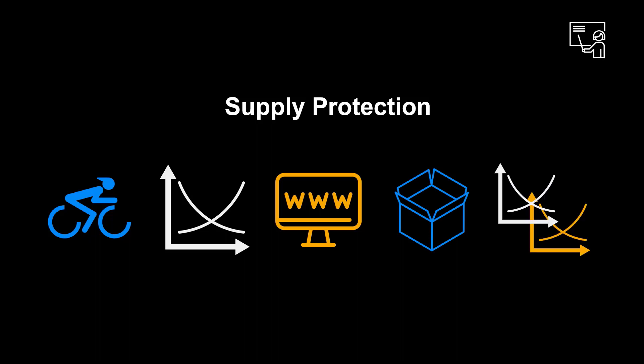Within a supply protection object, there can be protection groups of different prioritization, where a group with high priority takes priority over a lower prioritized protection group. This is known as vertical protection.